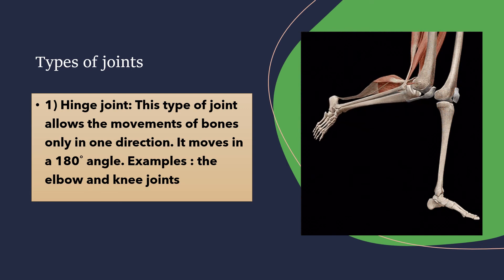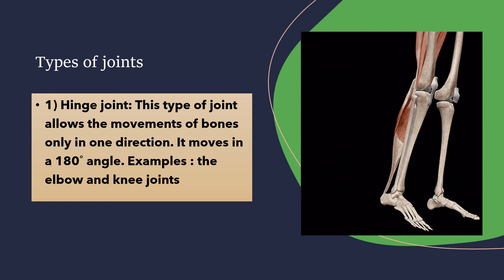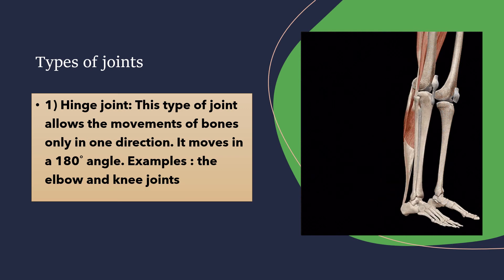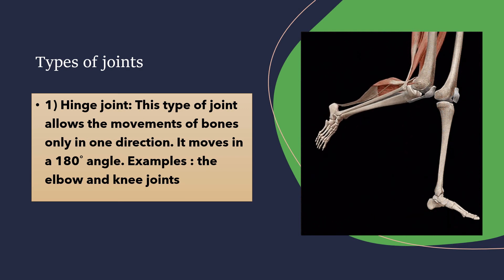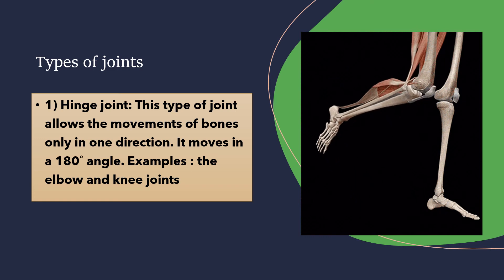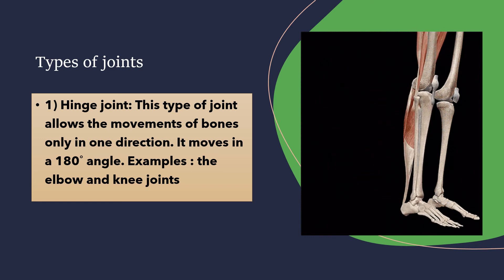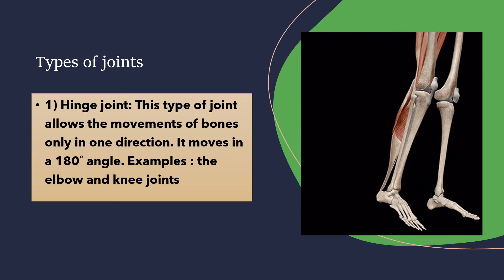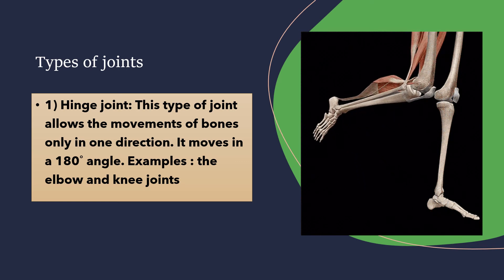The first type of joint is the hinge joint. This type of joint allows the movement of bones in only one direction. It moves at a 180-degree angle. Examples include the elbow and knee joints.